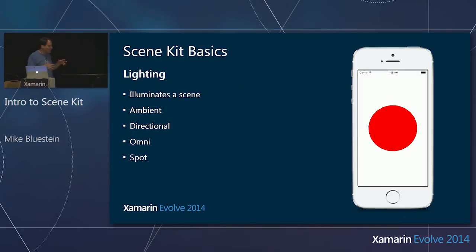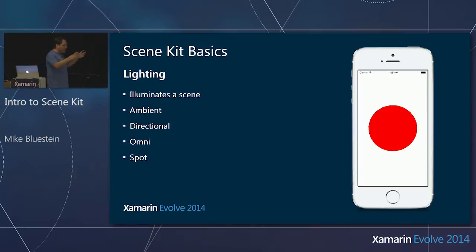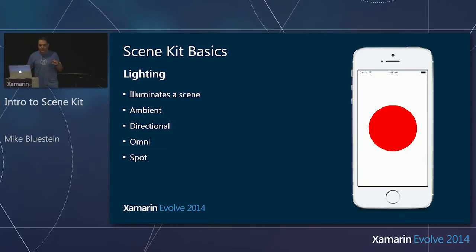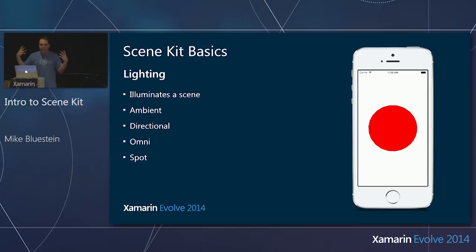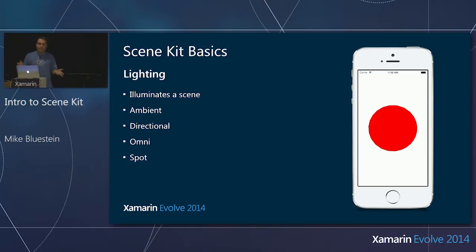Once you have your geometry in the scene, how do you make it show up with color on screen? SceneKit has lighting built in. Everything is very declarative — you're just adding lights into the scene and that illuminates the scene.